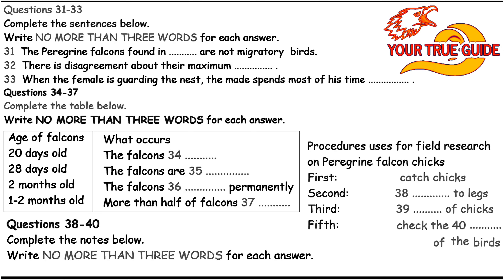When we come across nests with young chicks, the first thing we do is catch the chicks before they're able to fly. We then attach identification rings to their legs. These rings are made of colour-coded aluminium, and they allow us to identify the birds through binoculars later in their lives. Because we need to know how many males and how many female chicks are being born, we note the sex of the chicks. Noting the sex of the birds is a vital part of our research. The next thing to do is to take a blood sample from the chicks. We take the blood sample so that we can check the level of pesticide in their bodies.